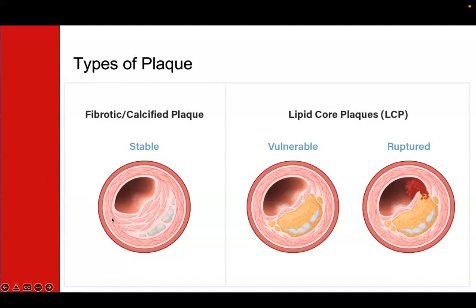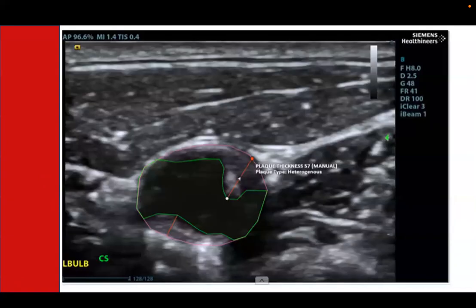Plaque that's in between and starting to calcify is called heterogeneous plaque. We can use the ultrasound to measure both the type of plaque and the amount of blockage and stenosis.